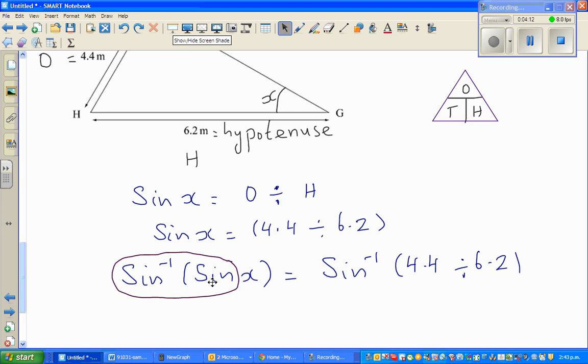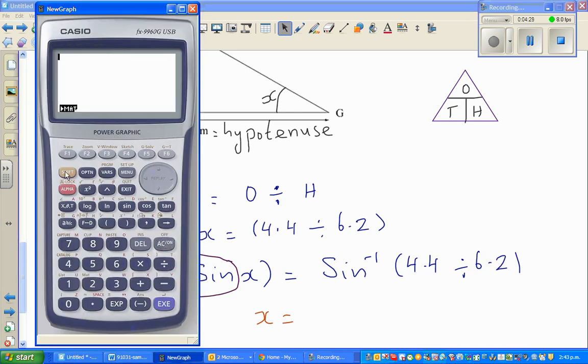That's what I did. I want to cancel the SINE. So if you want to cancel the SINE, you have to take the SINE inverse of SINE. So if you take SINE inverse of this side, you have to take the SINE inverse of the other side. So the next step would be X is equal to SINE inverse of - now you have to use a calculator for this. So you go SHIFT SINE of 4.4 divided by 6.2.